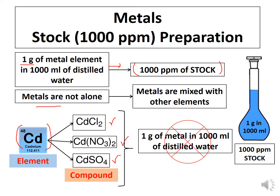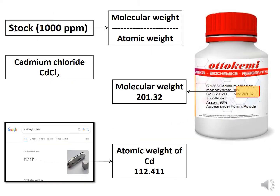Therefore, we are not simply mixing 1 gram of compound in 1 liter of water to prepare 1000 ppm of stock. Due to the nature of elements available in compound form, we use the formula: molecular weight divided by atomic weight, to prepare 1000 ppm of stock.